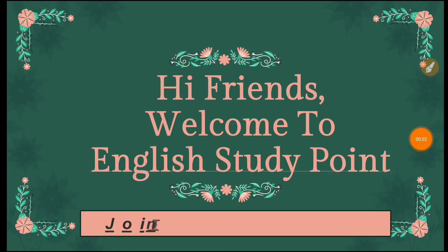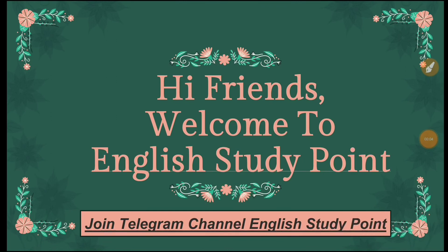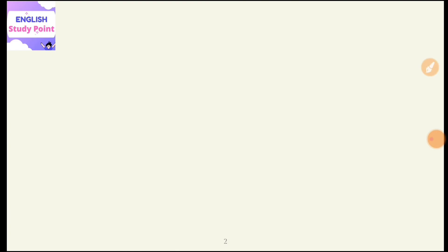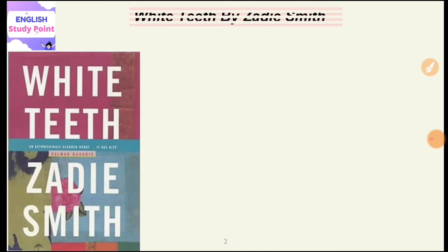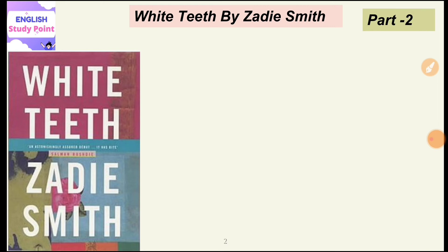Hi friends, welcome to English Study Point. Today in this video lecture I am going to discuss the most important work by Zadie Smith, that is White Teeth. Here I am letting you equip with the different kinds of problems and challenges faced by immigrants when they are transported into a completely new space. This novel is a kind of exploration which tries to describe the dilemmas of immigrants, not only immigrants but also their offsprings, when they are confronted with a new and different society.